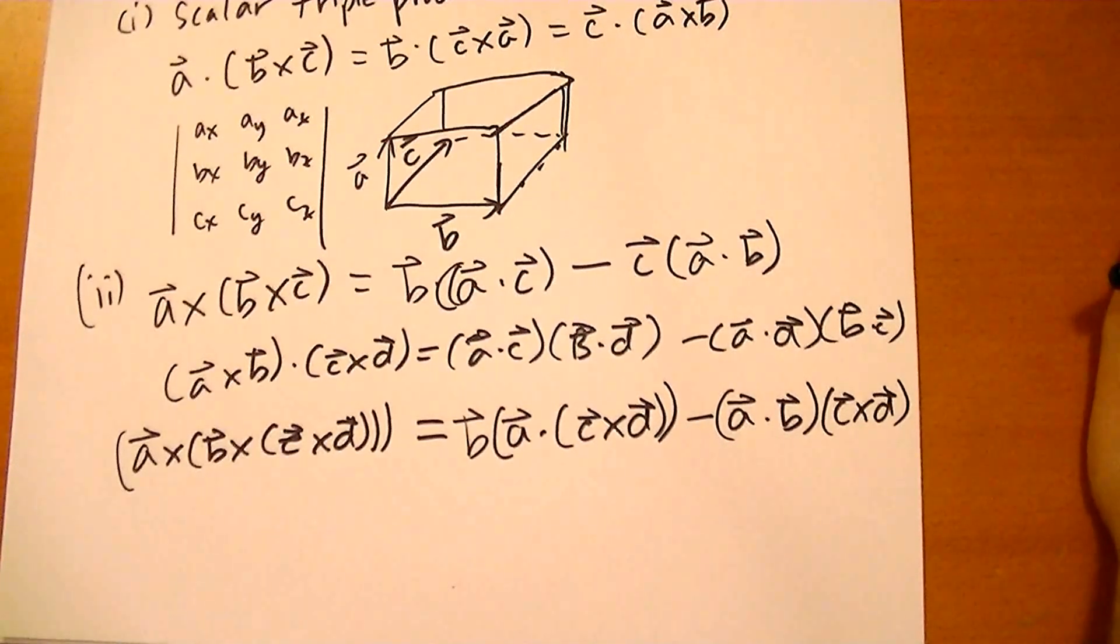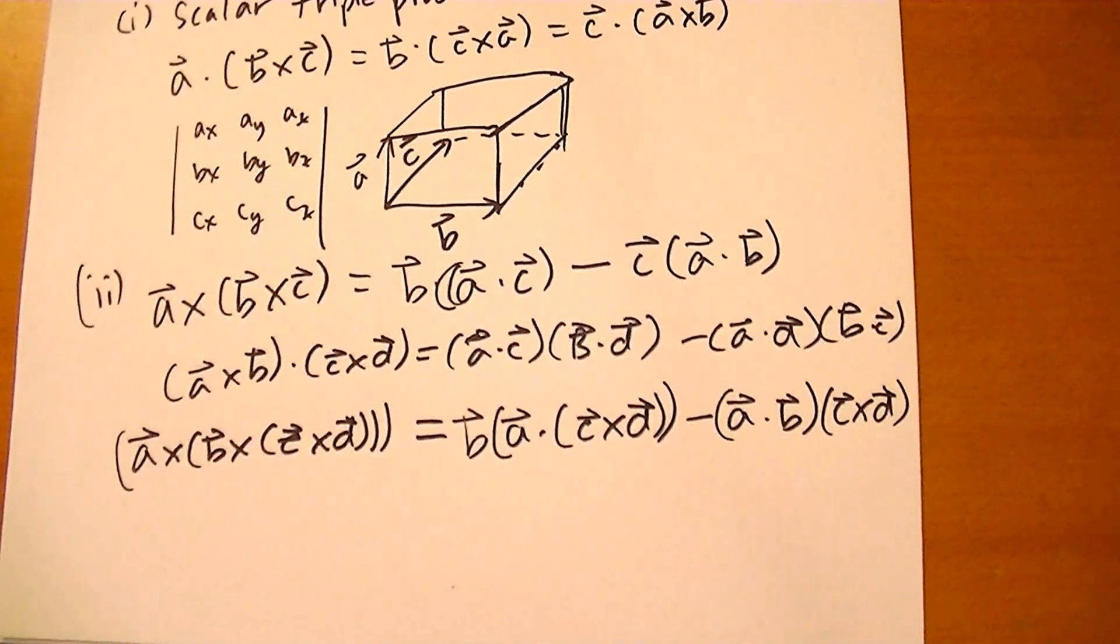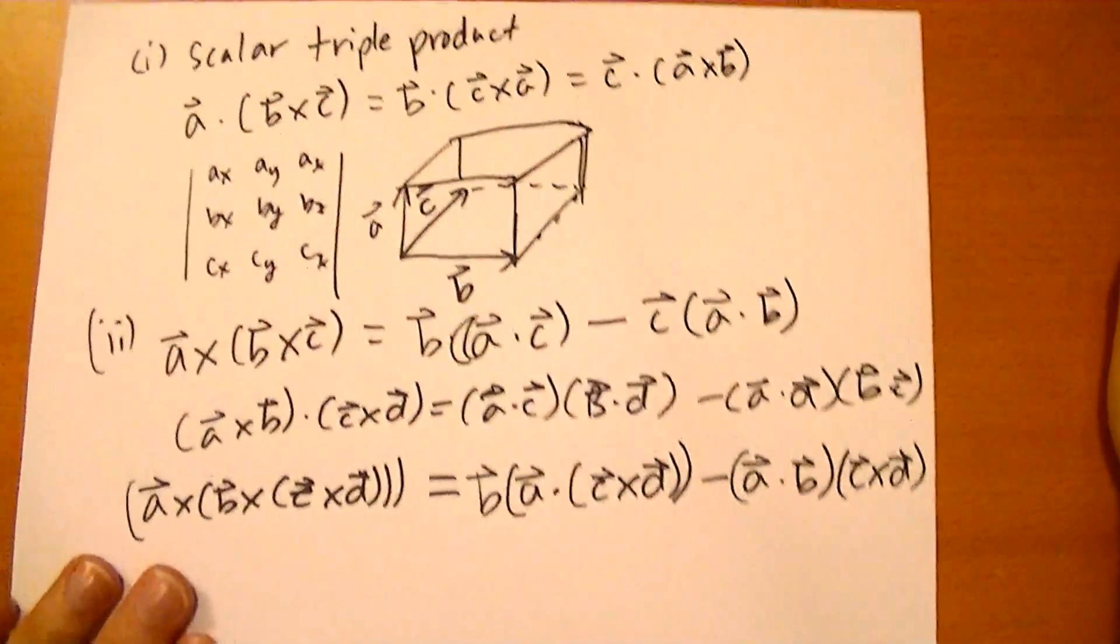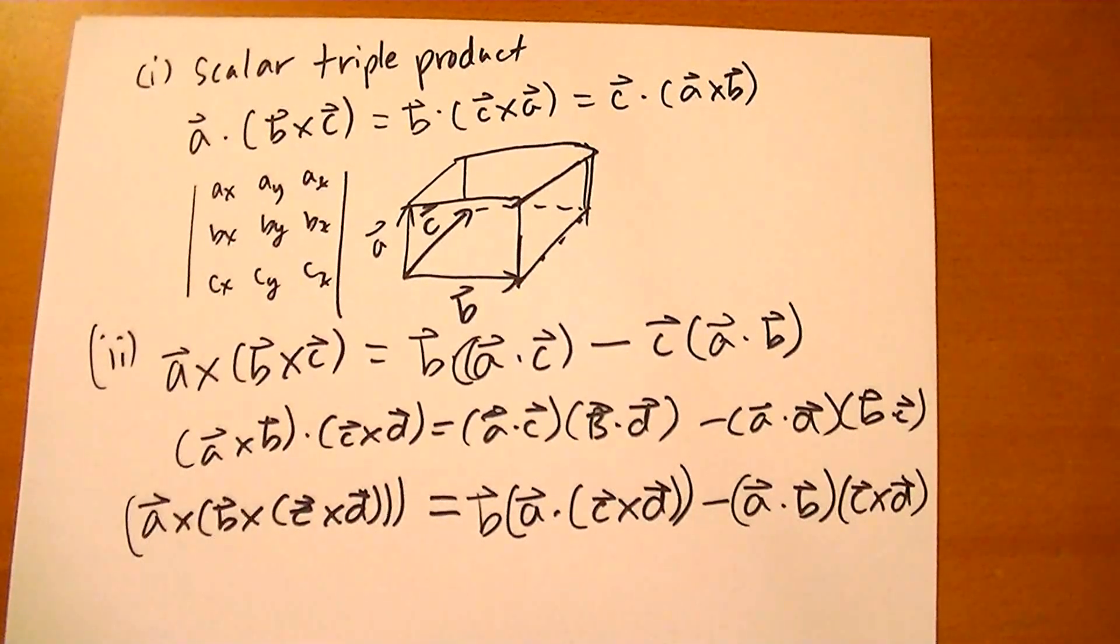So using these rules, you can simplify higher order triple cross products. Those two pretty much cover everything you need to know for higher products.